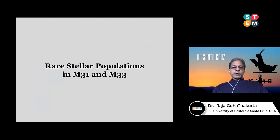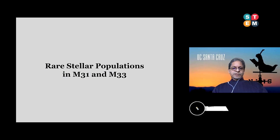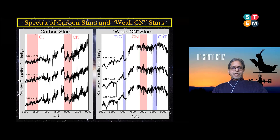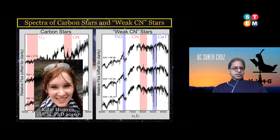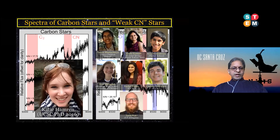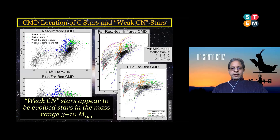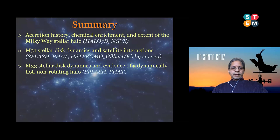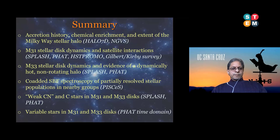I don't have time to go into the details of rare stellar populations in M31 and M33 — I'll just say that we've discovered some carbon stars and even a new flavor of stars called weak CN stars. This is the work of Katie Hamron and several high school students and undergraduates. In closing, I'll leave you with my summary slide. Thank you.